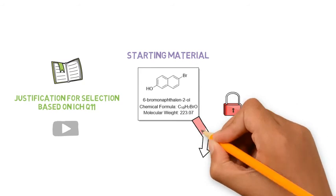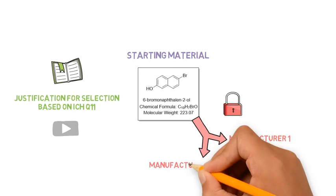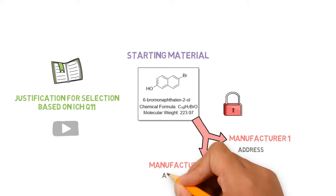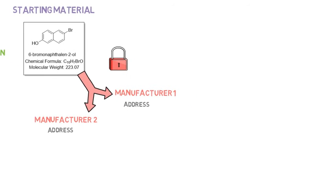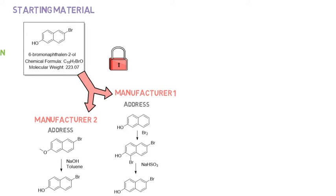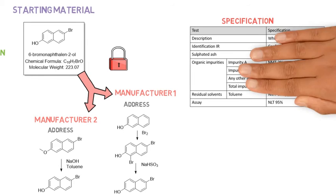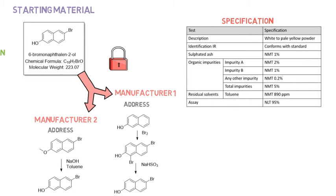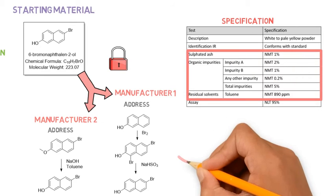In the Restricted Part, we will also find out if there is more than one manufacturer for the starting material, who they are, and their addresses. What is the route of synthesis of the starting material for each manufacturer? And what about the quality control specification? Does the specification make sense considering the different routes?